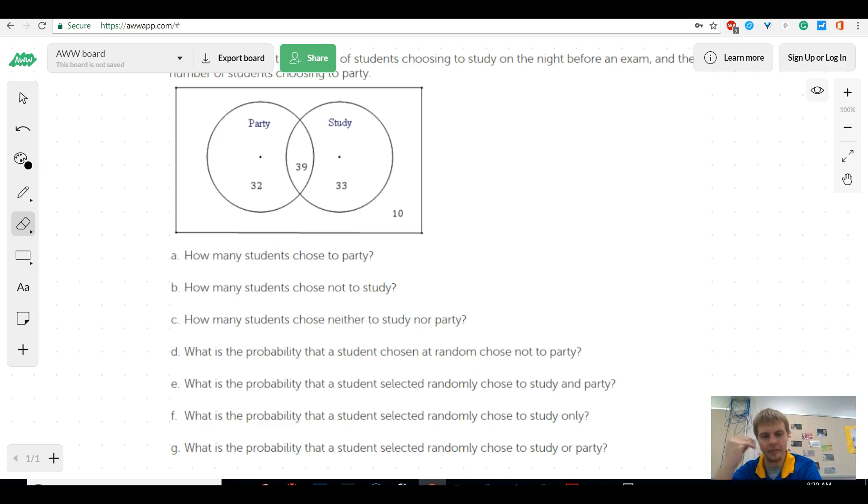Okay, so in this example, it's very similar to the first one, but I thought this one was a little bit better, because they have a little bit more probability stuff at the end. So, how many students chose to party? Well, that would be everything in this circle, which would be 71. 71 people chose to party.